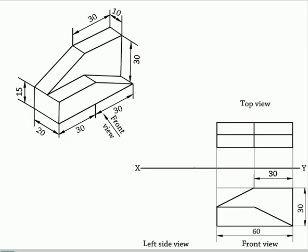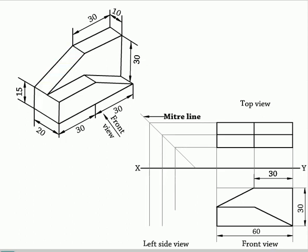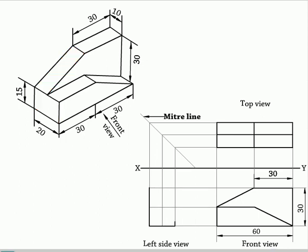Appropriately draw the miter line and projectors from the top view through the miter line. Now draw the projectors from the front view horizontally, complete the left side view and show the dimensions appropriately in the view.